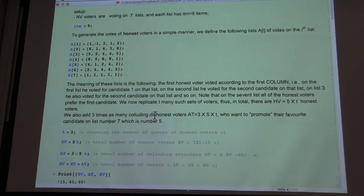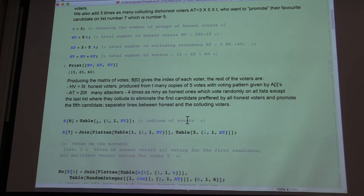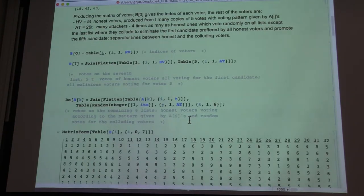So this tells you how many blocks of the votes we concatenate. So we concatenate three blocks. And this will represent, quote-unquote, honest voters that did not collude.